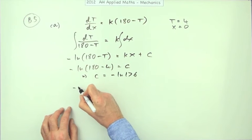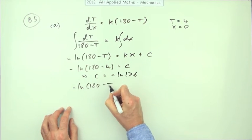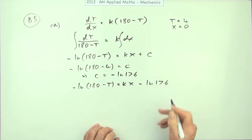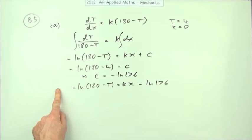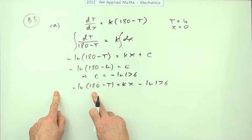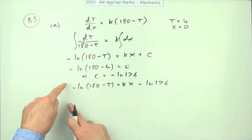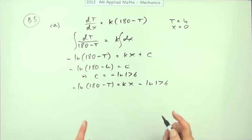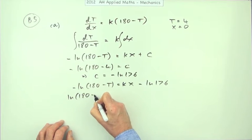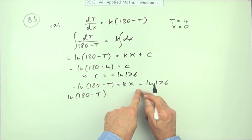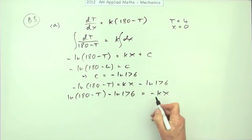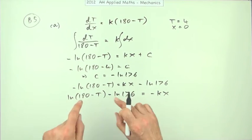Putting c back in: negative ln(180 minus t) equals kx minus ln(176). I'll flip all the signs, giving ln(180 minus t) equals minus kx plus ln(176). Rearranging, I can write the difference of two logs and then divide, keeping t in the numerator.